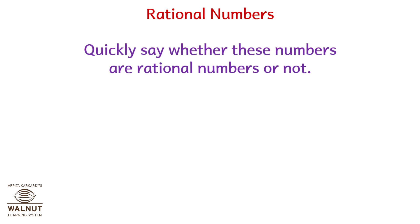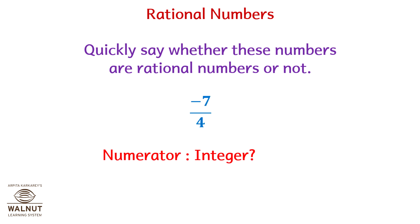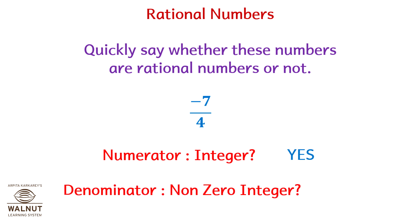Quickly say whether these numbers are rational numbers or not. Minus seven upon four: numerator integer? Yes. Denominator non-zero integer? Yes. So yes, it's a rational number.